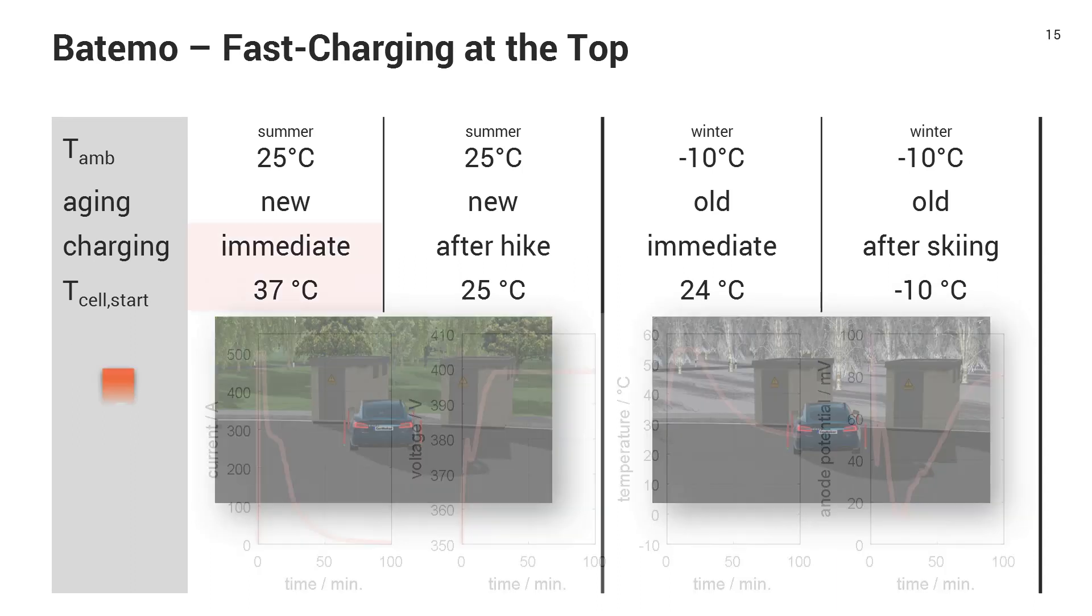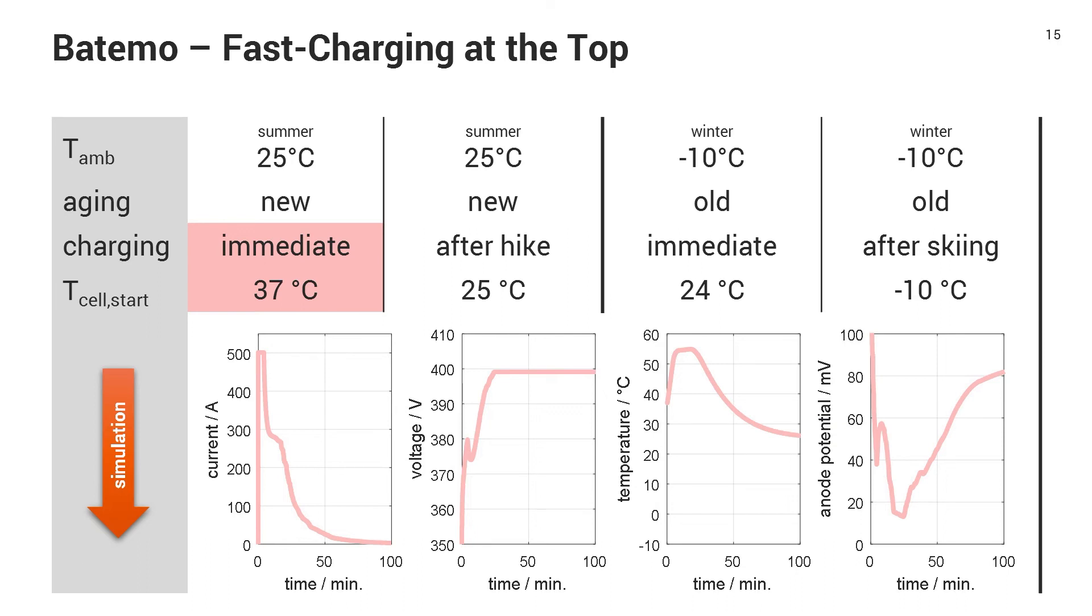If you simulate that in MATLAB, I now show you the four limits that I introduced. So the current, the voltage, the temperature and the potential for this immediate charge in the summer. Again, you see at the beginning, you reach the current limit, then you reach the temperature limit. So we have to decay the charging current because the cell is too hot. And then you reach the anode surface potential limit before hitting the voltage limit. So it's very interesting that in this scenario, you really reach all of those four limits.